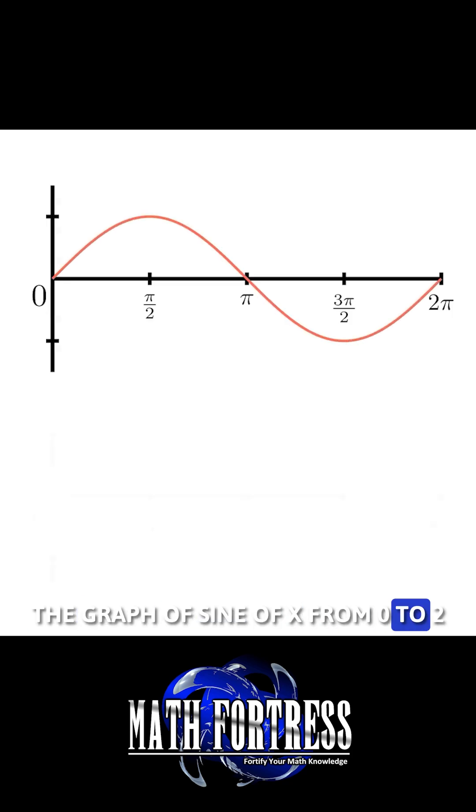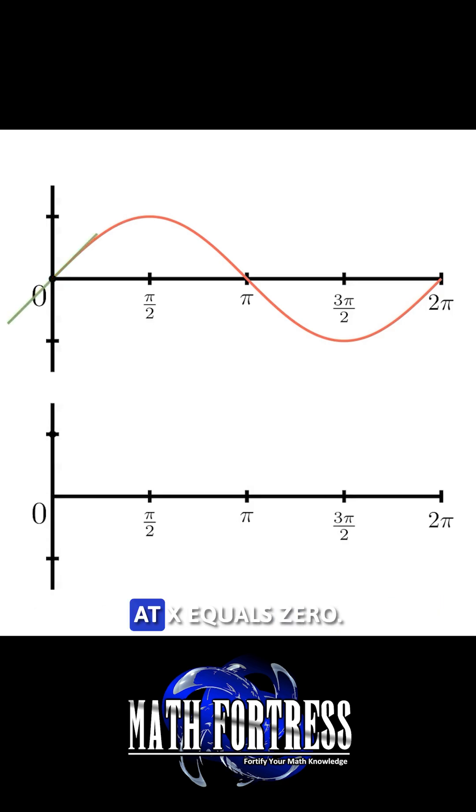The graph of sine of x from 0 to 2 pi looks like this. We will draw the tangent line at x equals 0.